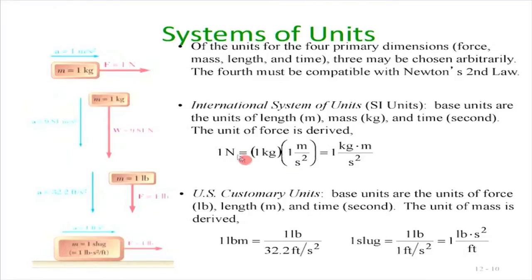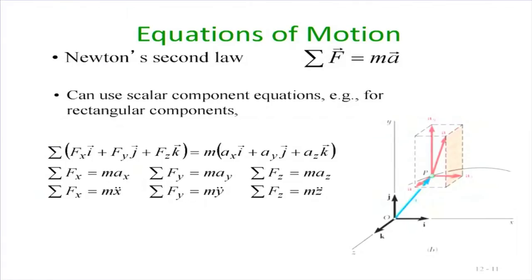We will see more examples tomorrow. For system of units: 1 Newton = 1 kg × 1 m/s². Newton's law equations of motion state that force equals m times acceleration. We can break down forces and acceleration into components x, y, and z. So: ΣFₓ = m·aₓ = m·ẍ, ΣFᵧ = m·aᵧ = m·ÿ, and ΣF_z = m·a_z = m·z̈. This is straightforward.